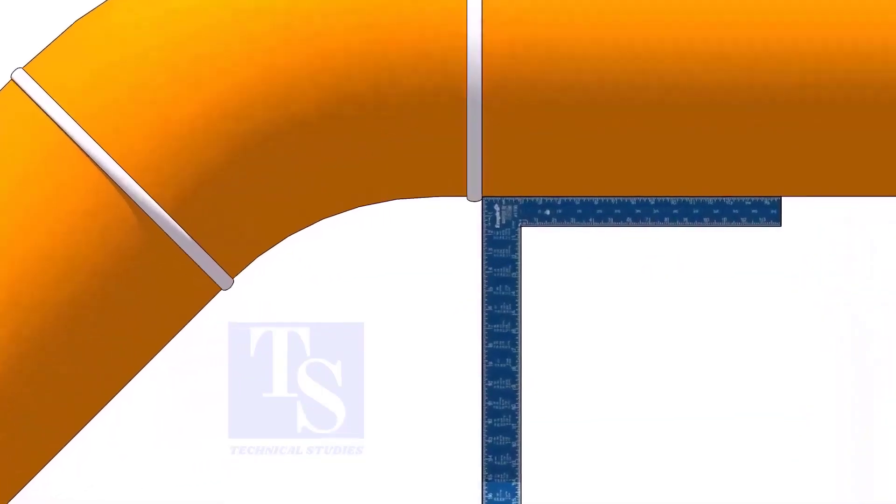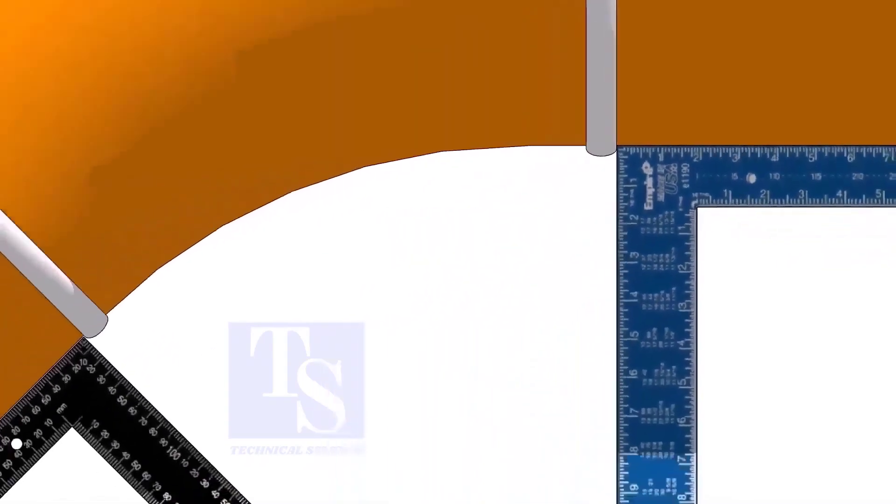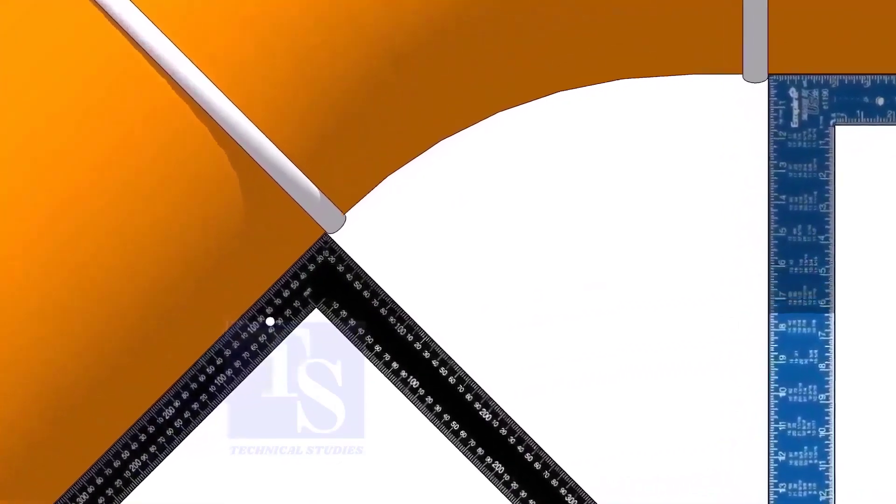Hold one right angle on the pipe just outside the weld joint, as shown. Hold another right angle on the other pipe. Make sure both right angles are sitting on the center of the pipe.